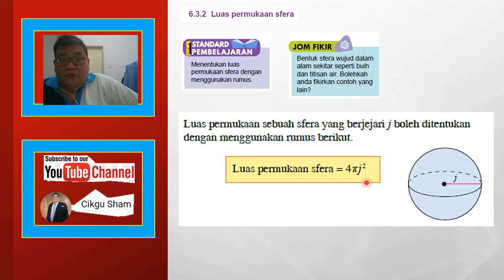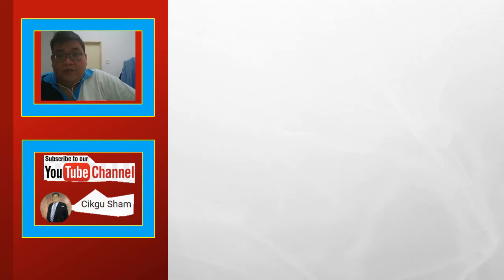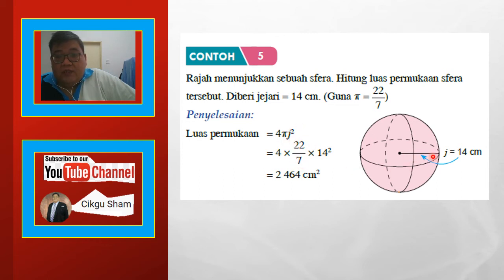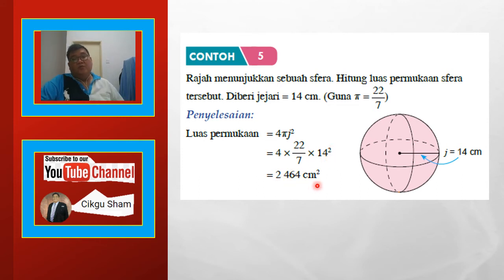Dia terus dah ada formula khas — luas permukaan sfera dengan jari-jari j boleh ditentukan dengan rumus: 4πj². Macam mana dapat 4πj² ni, anak-anak boleh try Google. So luas permukaan sfera, anak-anak ingatlah formula dia: 4πj². Contoh 5: Rajah menunjukkan sebuah sfera, hitung luas permukaan sfera tersebut. Jari = 14, pi = 22/7. Luas permukaan sfera = 4πj². Masuk je: 22/7, j = 14, 14² = 196. Selesaikan, dapat 2464.